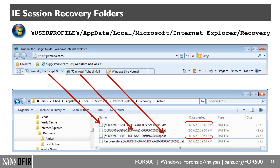Another artifact not many forensic tools parse correctly is the IE session recovery folders — this has been around since IE 8. When your browser crashes and asks if you'd like to restore your last browsing location, those sessions are stored under local Microsoft Internet Explorer Recovery Active as .dat files — each one representing a separate tab from your last browsing session. One of the reasons these are very important is that even in private browsing mode in Internet Explorer, these .dat files are written to disk and are recoverable — you can see all the websites and the history of each tab, including those browsed in private mode.